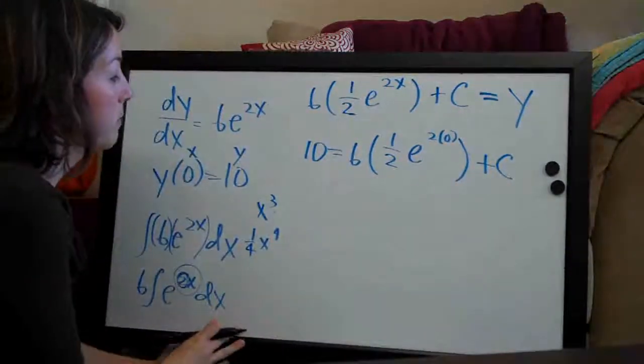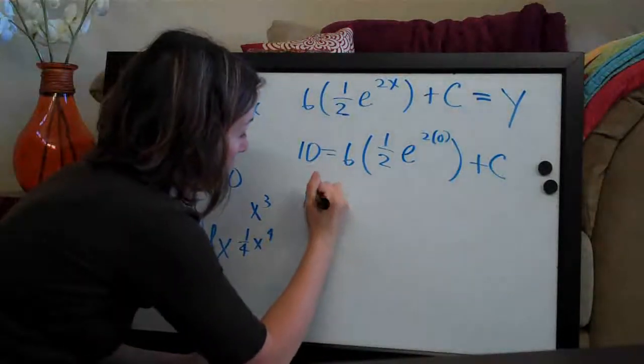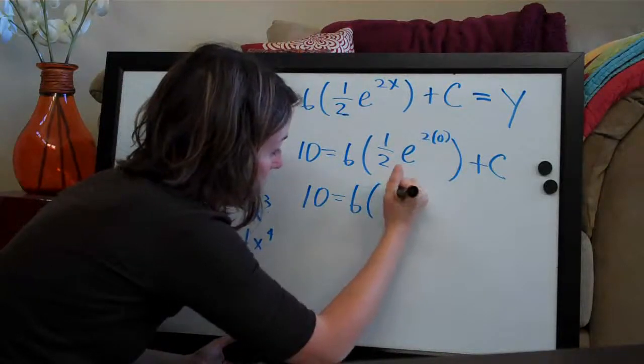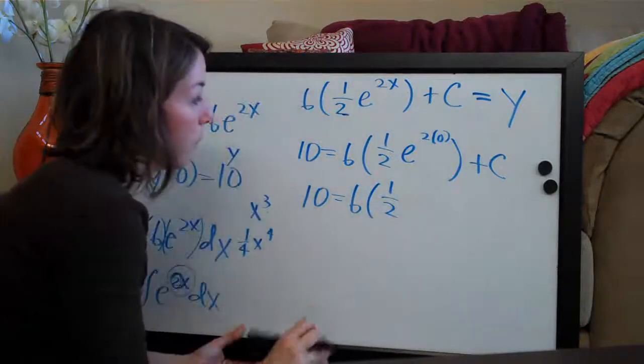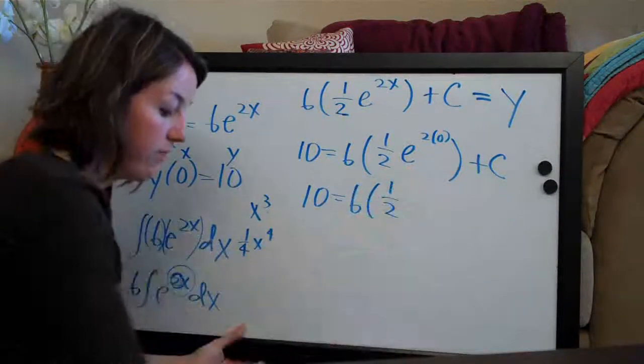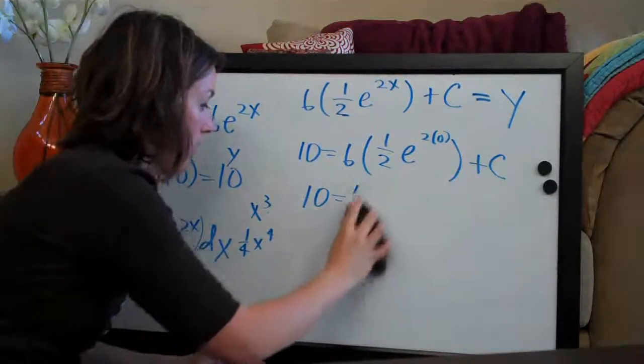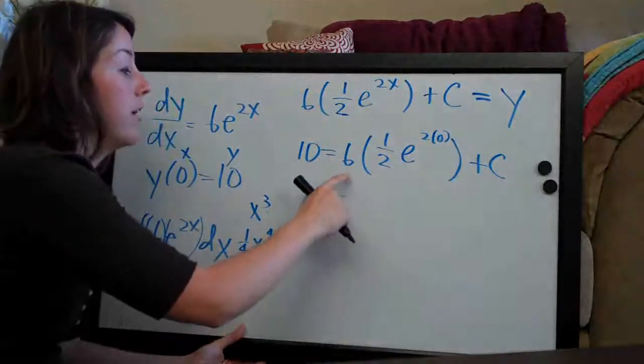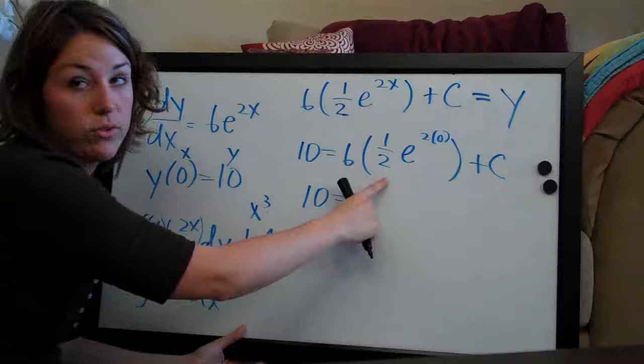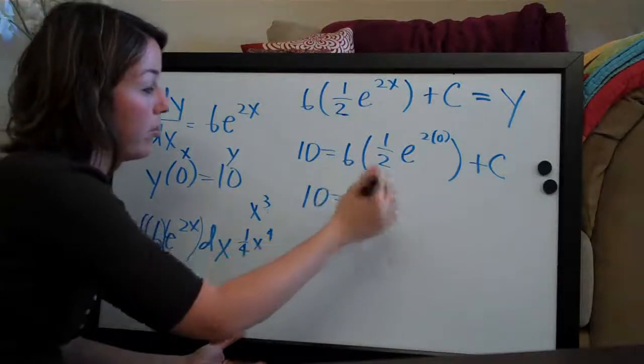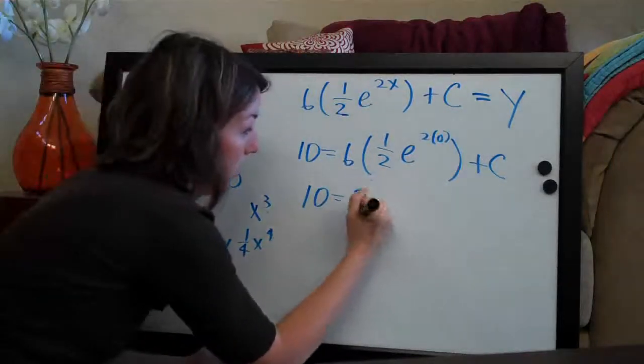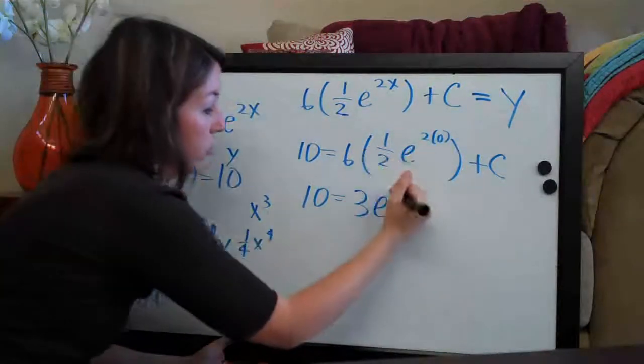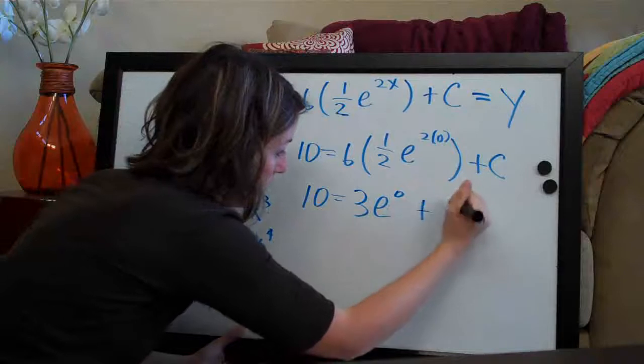Now all we need to do is simplify. We have 10 = 6 × 1/2. Let me skip one step here. We're going to do 6 times 1/2 first. 6 × 1/2 is of course 3, or 6 divided by 2 equals 3. And then e^0 + c.